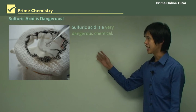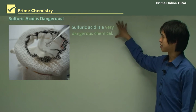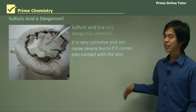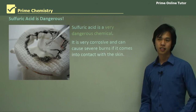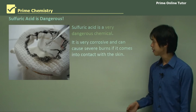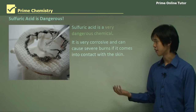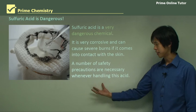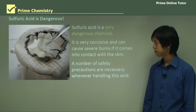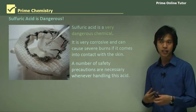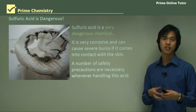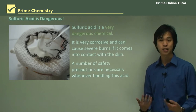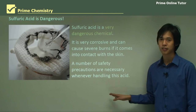First and foremost, sulfuric acid is dangerous because of various factors. It's a very dangerous chemical and it's very corrosive. Like many other acids and bases, it's extremely corrosive and it can cause severe burns if it comes into contact with the skin. It also absorbs water, and when it absorbs water it dilutes, and when it dilutes it releases a lot of heat. So not only does it cause chemical burns, it can cause actual physical or heat burns as well.